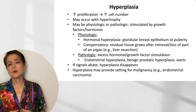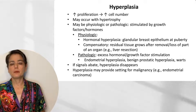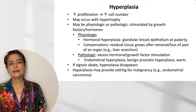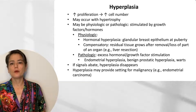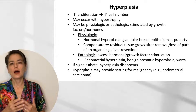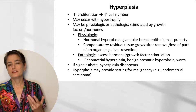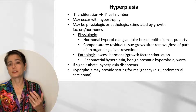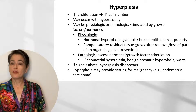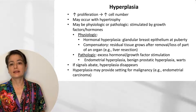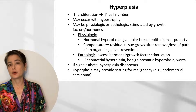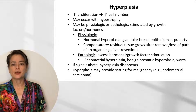There are two important concepts about hyperplasia you need to know. One is that if these signals abate — if we remove those hormones or growth factors — the hyperplasia will resolve. This is in contradistinction to neoplasia, which is autonomous growth. Furthermore, hyperplasia can provide a setting for malignancy. An example of this is endometrial carcinoma, which is increased in individuals with endometrial hyperplasia.